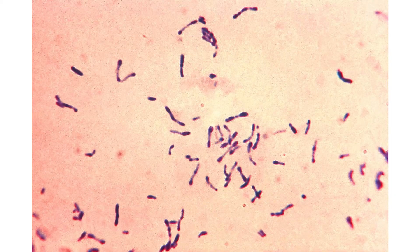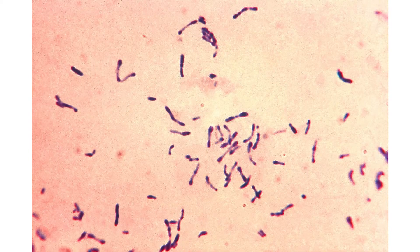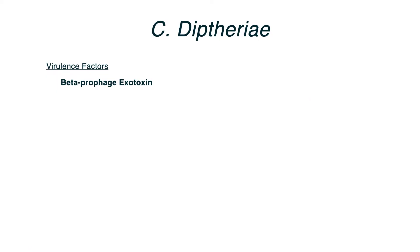Here's the image of diphtheria showing metachromatic granules and palisade formations. If you look at the top left of the slide, you can see a really nice example of that V-shaped palisade. Because this is a somewhat unique-looking organism, it's worth knowing what it looks like compared to other bacteria.